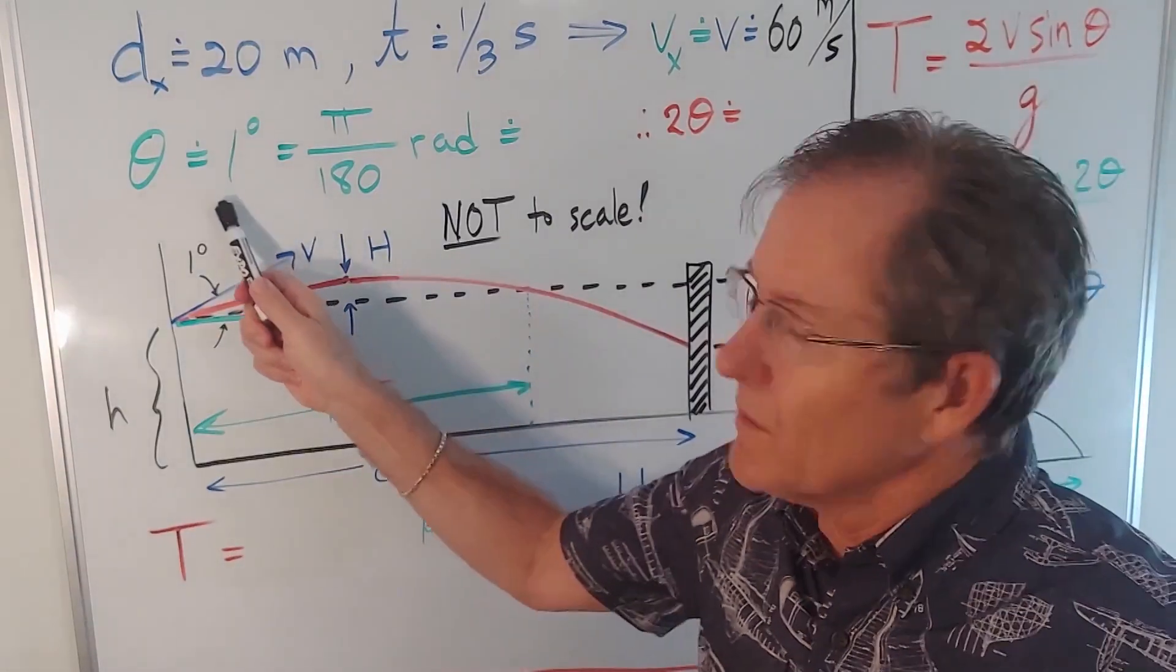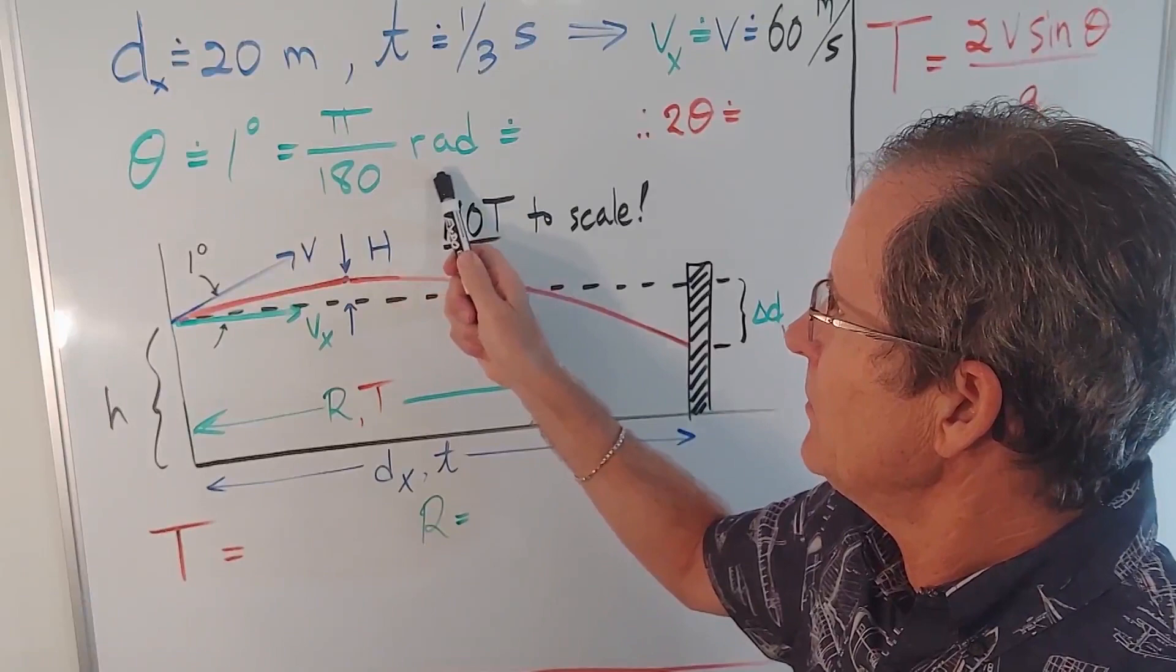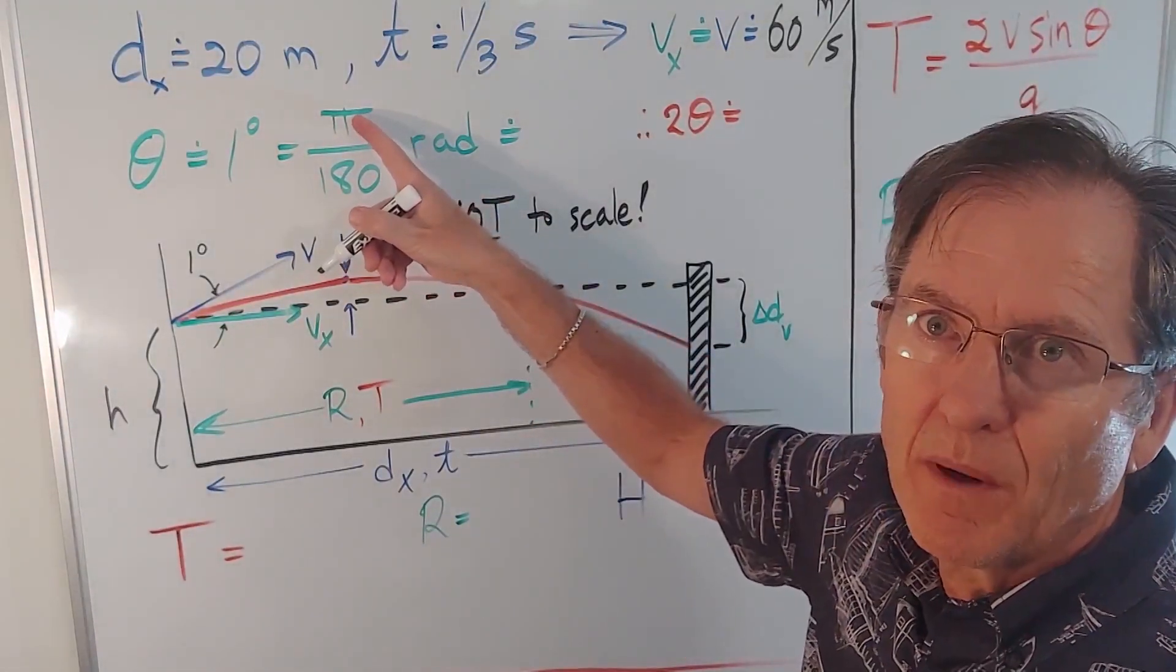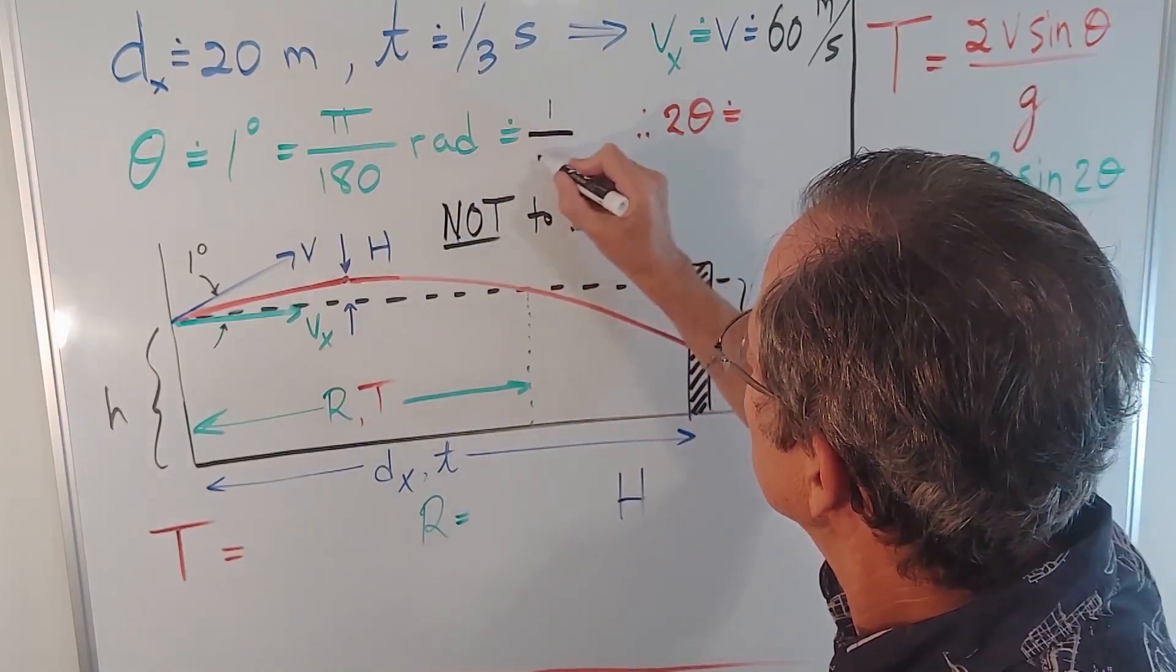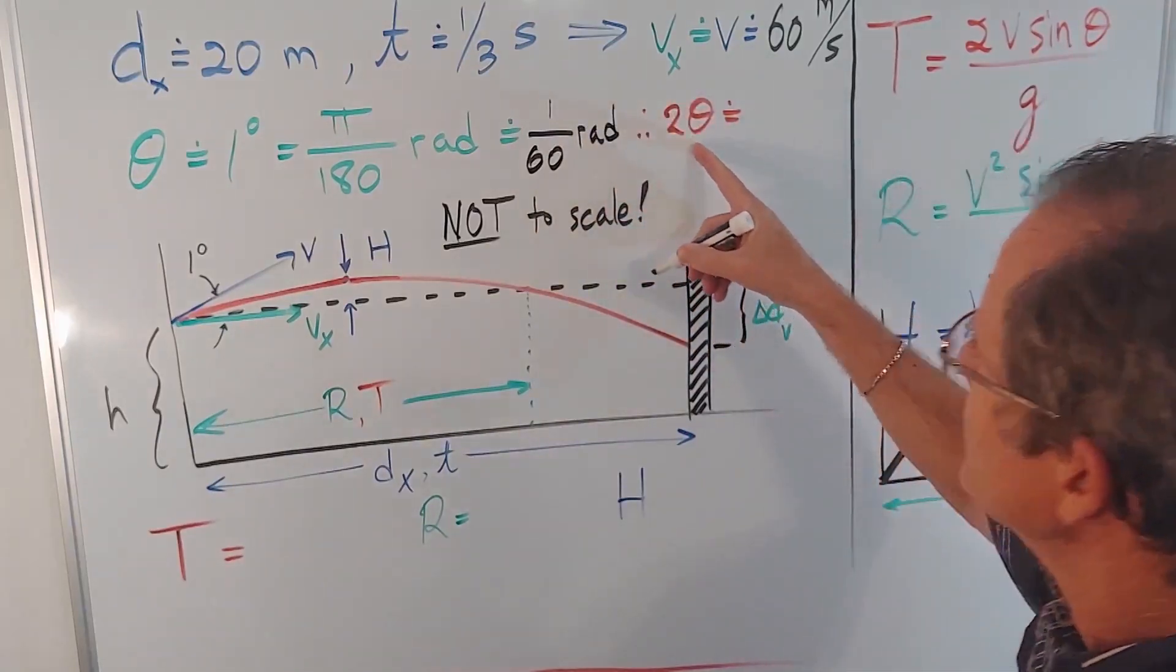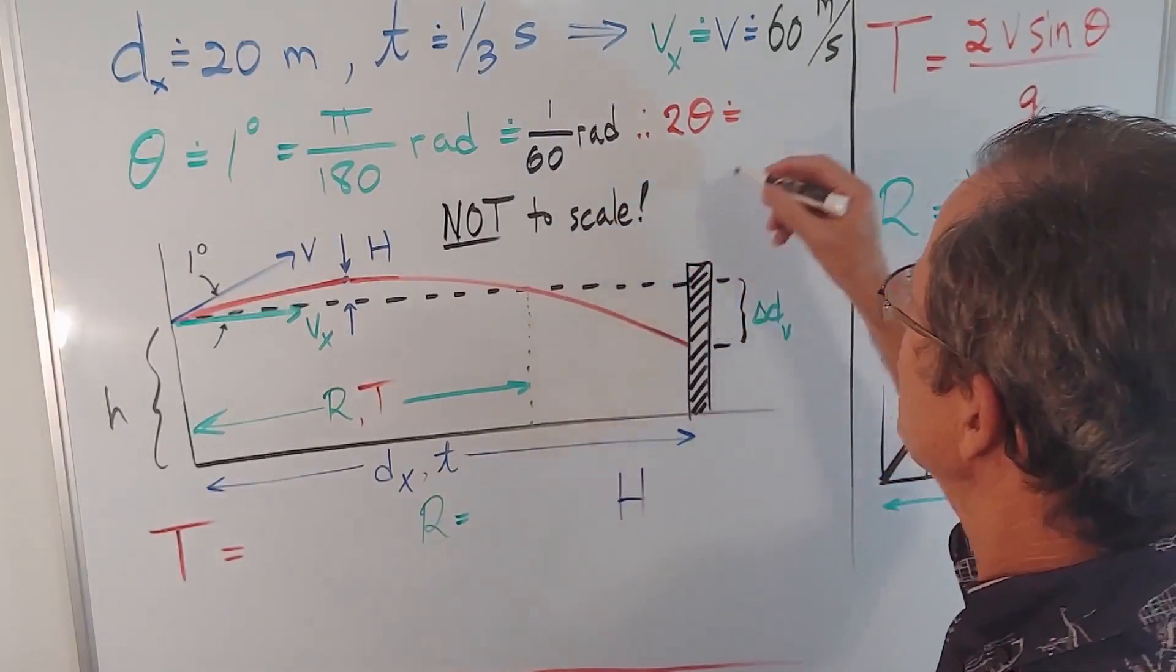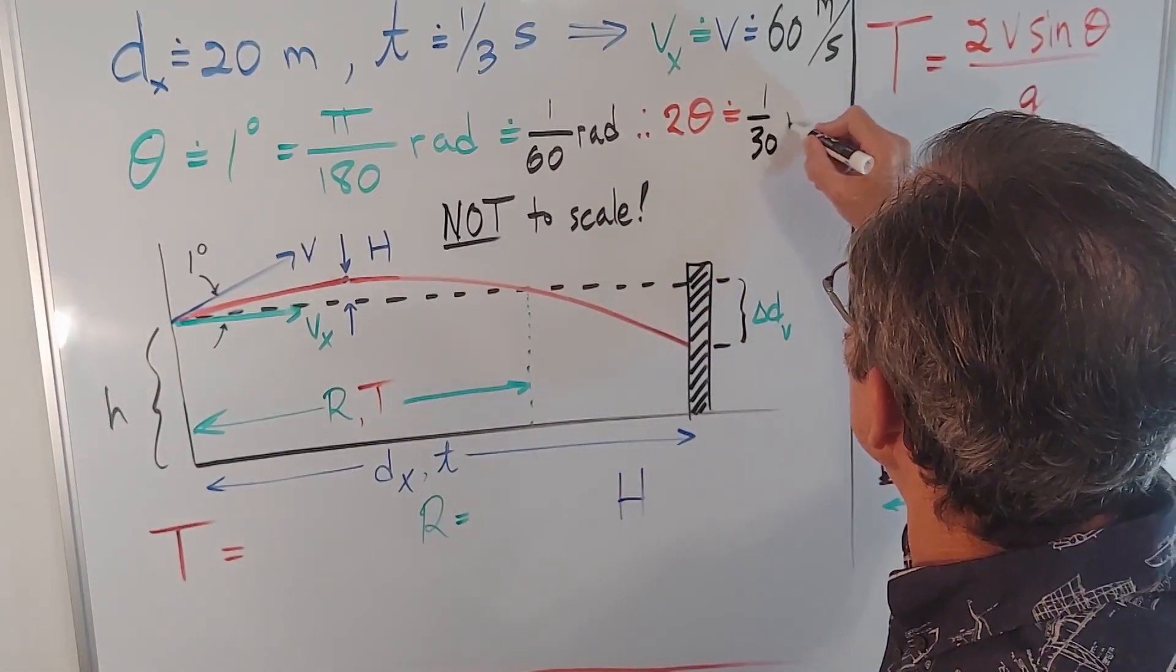Don't forget, 1 degree, which is exactly π divided by 180 radians, would be approximately, if I use 3 for π because this is all approximate, I get 1/60 of a radian. And therefore, 2θ, which I need in the range formula, would be double that, 2 over 60 or 1/30 of a radian.